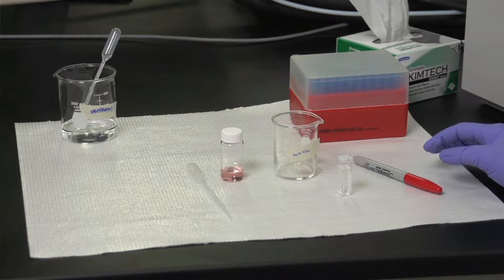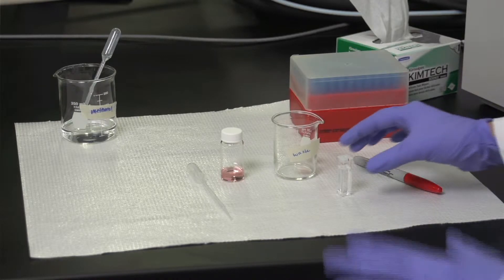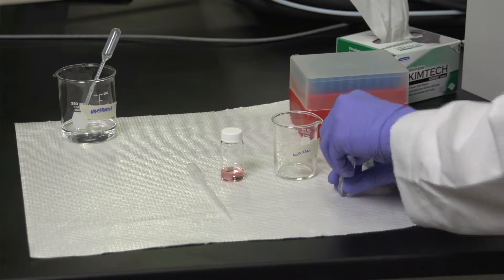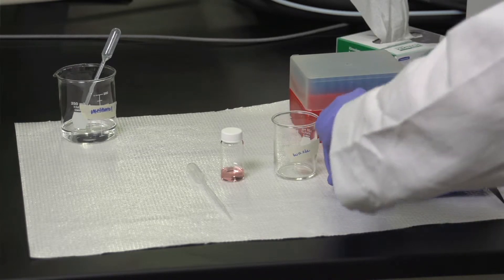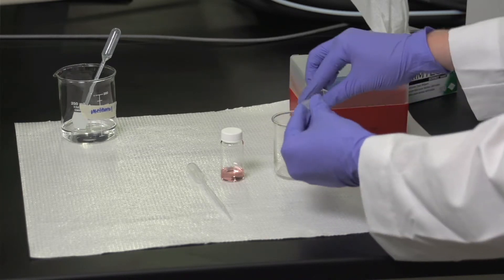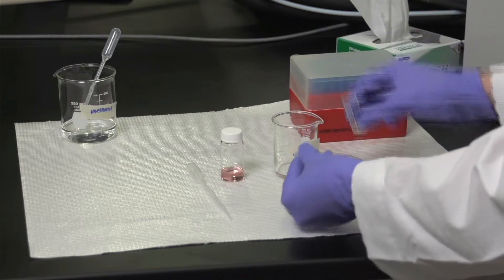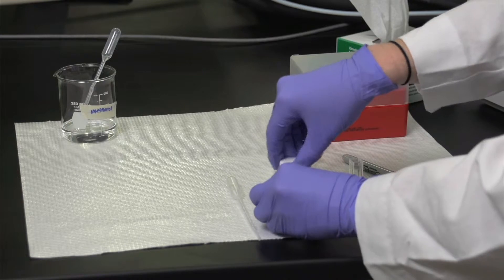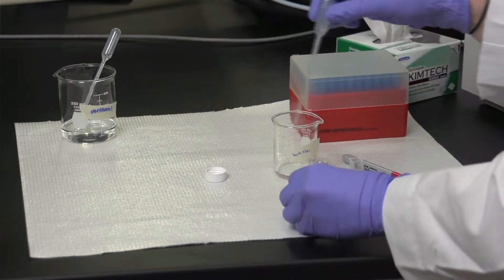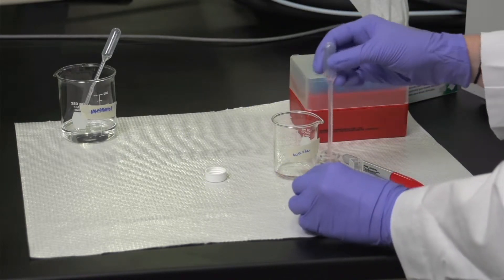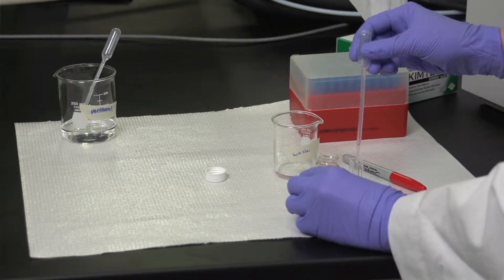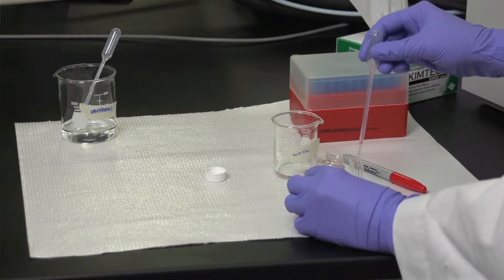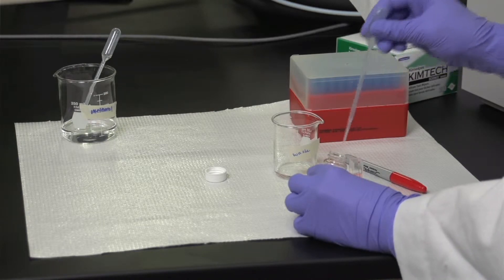To collect the cyanine dye spectrum, we'll want to use the same cuvette as we did for the background so that the inconsistencies are the same. Dump out the methanol into the waste, and then fill the cuvette two-thirds of the way full with the dye solution. It needs to be two-thirds of the way full so that we can ensure that the light beam goes through the sample.